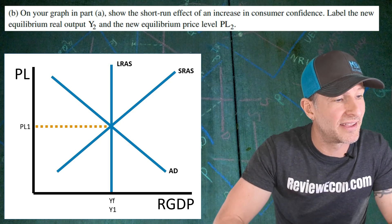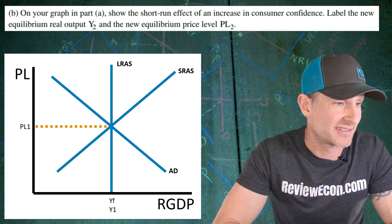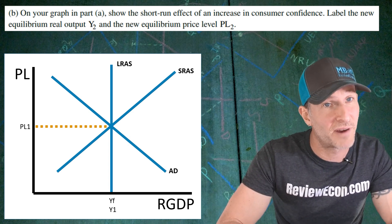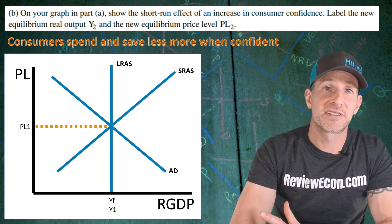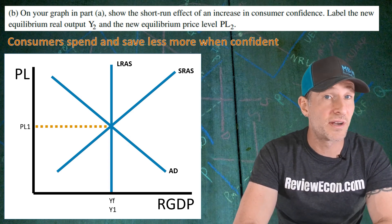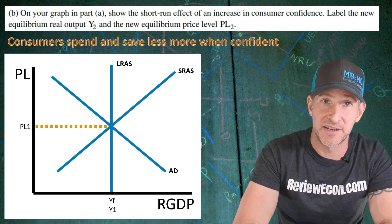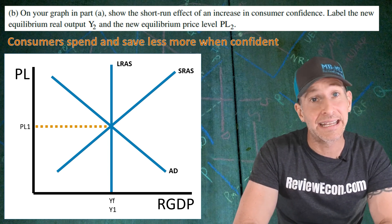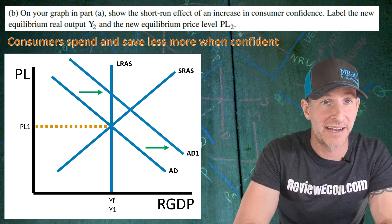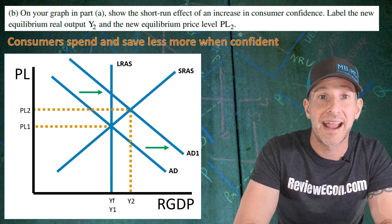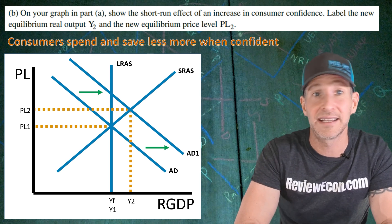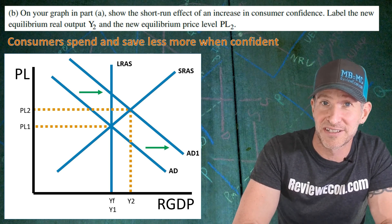For part B, we assume there is an increase in consumer confidence in Zeta, and we label the new output Y2 and the new price level PL2. When consumer confidence increases, consumers save less and spend more, meaning consumption increases. An increase in consumption shifts the aggregate demand curve to the right, causing both the price level and real GDP output to increase. Shifting the curve correctly and labeling the new equilibrium earns the next point.